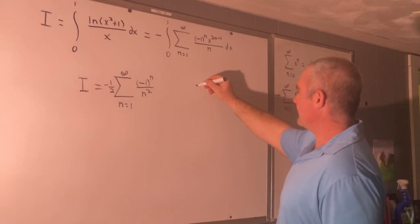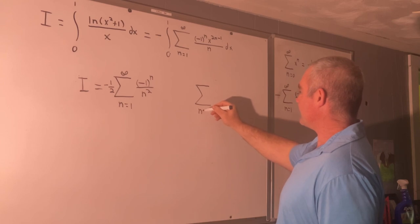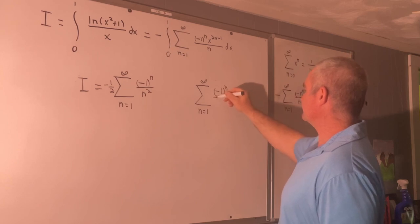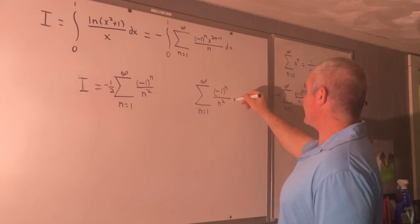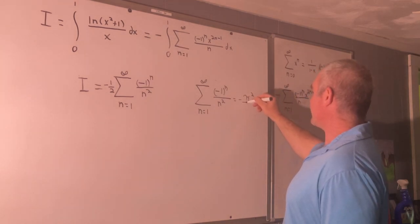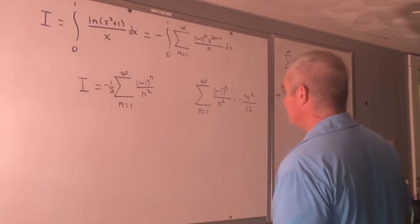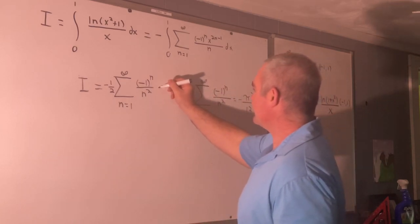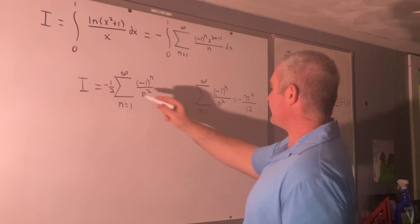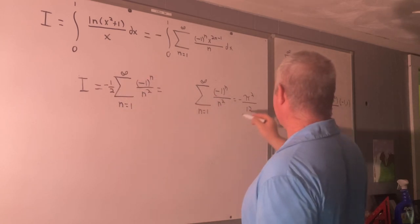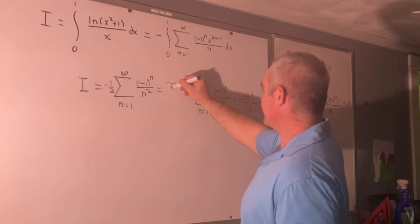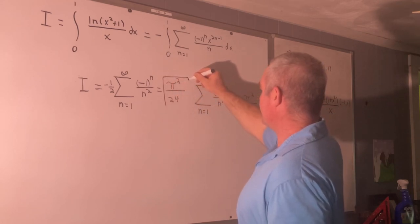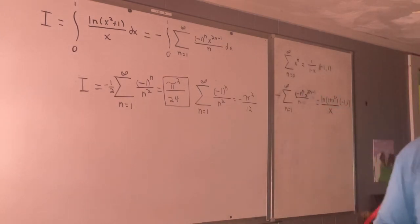In a previous video I showed that this is equal to negative pi squared over 12. So that's exactly what we have right here. So this is equal to negative times a negative is a positive 1 half pi squared over 12 or simply pi squared over 24. And that's the answer guys. I hope you enjoyed that.